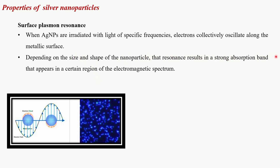The optical properties of silver nanoparticles also depend on the refractive index near the nanoparticle surface. As the refractive index increases, the extinction spectrum shifts to longer wavelengths — known as red shifting. For example, particles transferred from water (refractive index 1.33) to air (refractive index 1.00) will blue shift, while transfer to oil (refractive index 1.5) causes a red shift. Furthermore, when particles aggregate, conduction electrons become delocalized and shared among neighboring particles, causing the surface plasmon resonance to shift to lower energies and longer wavelengths.